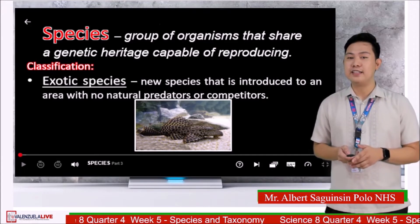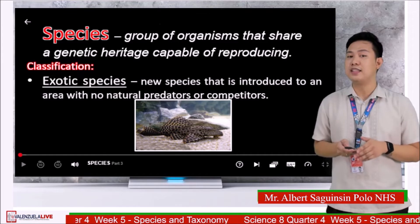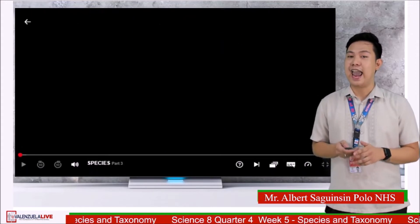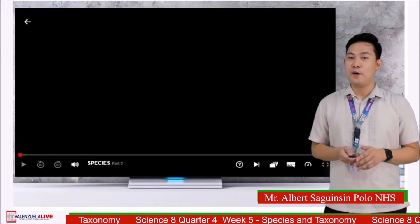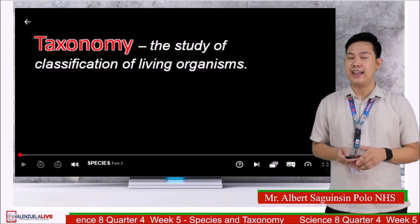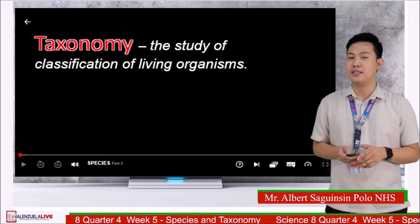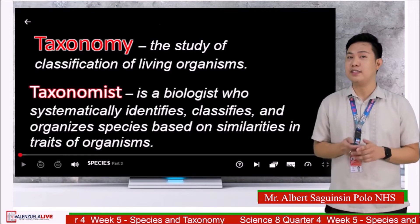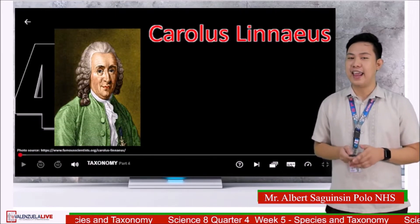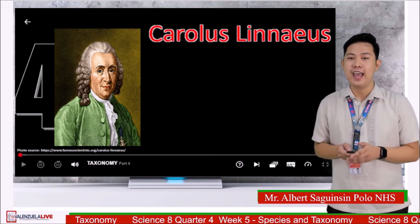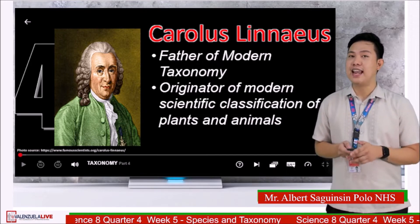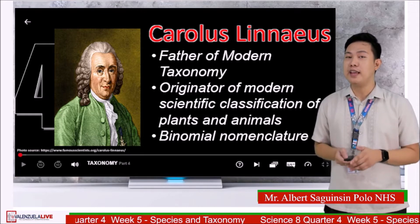To study the diversity of species, biologists use a classification system to name and organize species in a logical manner. The science of classifying and identifying and organizing living organisms is known as taxonomy. A biologist who systematically identifies and classifies organisms based on similar traits is called a taxonomist. One of the most famous taxonomists is Carolus Linnaeus, known as the father of modern taxonomy and the originator for classifying plants and animals.